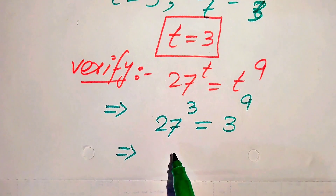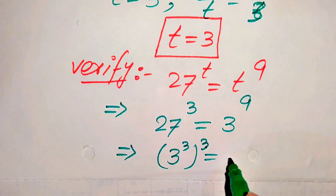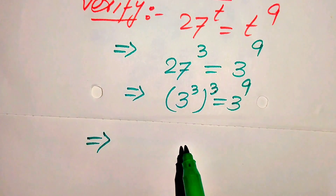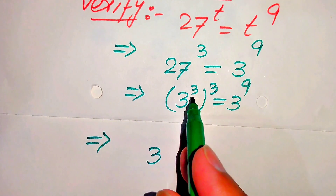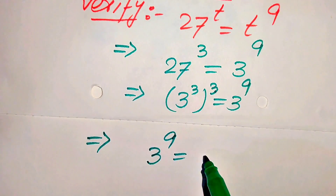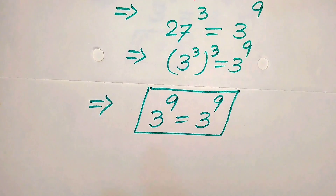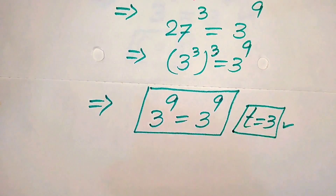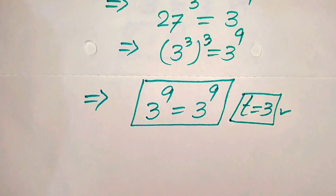We do working on the left hand side: we write 27 as 3 cubed, whole power cubed, equals 3 to the power of 9. Using the exponent law, we multiply the two exponents: 3 to the power of 3 times 3 becomes 9, equals 3 to the power of 9. This shows that t equals 3 satisfies the given equation. So t equals 3 is the only solution of the given equation — this is our final answer. Thank you so much for watching this video; please subscribe to my channel for more exciting videos.